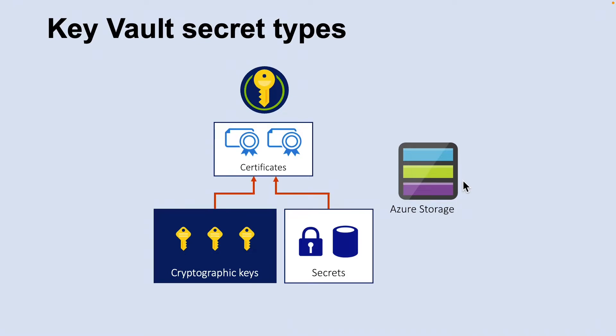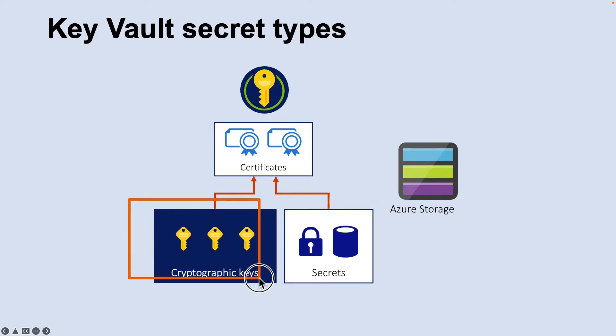Now let's look into Key Vault secret types. Key Vault enables Azure applications and users to store and use several types of secret or key data, including cryptographic keys, secrets, certificates, and Azure storage. First, looking into cryptographic keys: Key Vault supports multiple key types and algorithms, and uses hardware security modules for high-value keys.